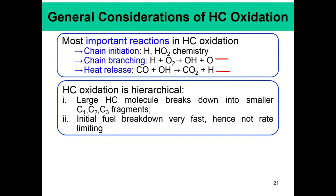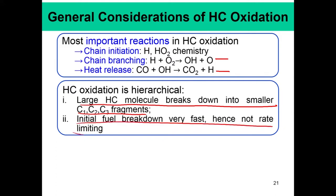What large hydrocarbon molecules do is break down into smaller C1, C2, C3 fragments. This initial fuel breakdown is very fast, and hence these steps are not rate limiting. No matter how large the fuel is, the most important part is the reaction of these C1, C2, C3 fragments and the reactions of H, O2, OH, O, and so forth. In a very large complex fuel like N-dodecane, methane chemistry — governed by C1 chemistry — is still very important.